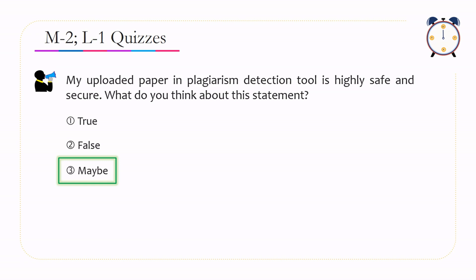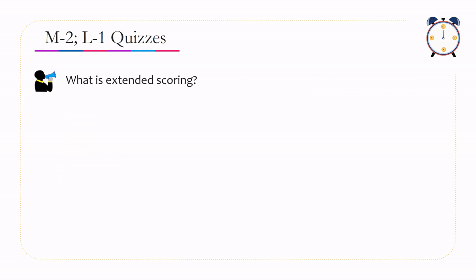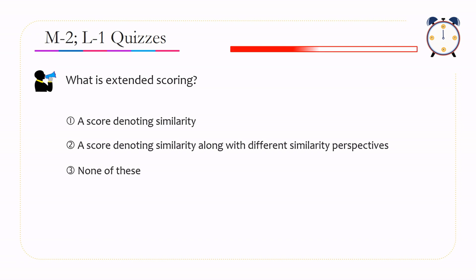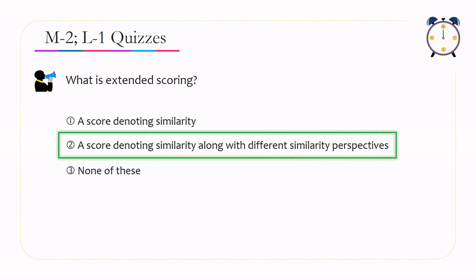Next question: What is extended scoring? Option 1: a score denoting similarity. Option 2: a score denoting similarity along with different similarity perspectives. Option 3: none of these. Option 2 is correct — extended scoring differs from similarity scoring in that it shows not just the overall percentage of similarity but also from which area the similarity score comes.